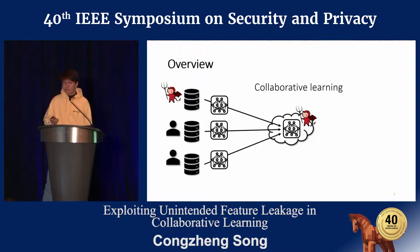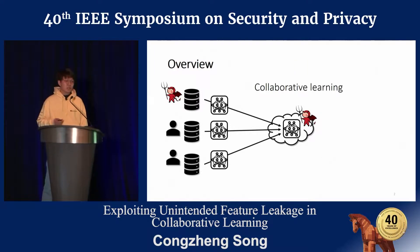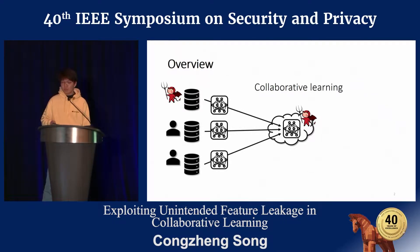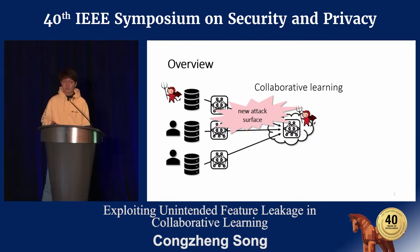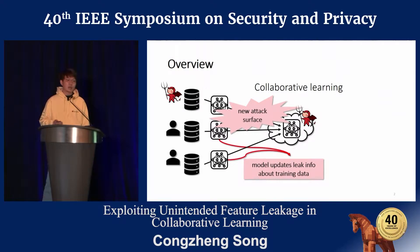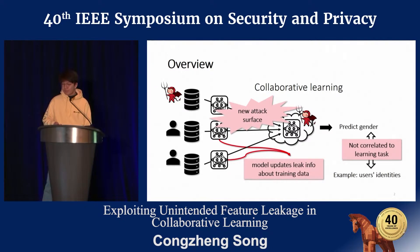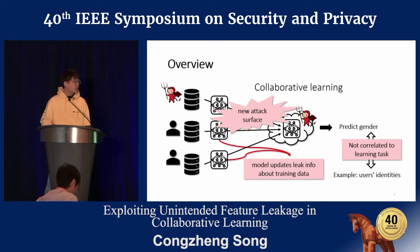Here's an overview of my talk. We consider the scenario of collaborative learning, where multiple clients wish to train a machine learning model together, and one of the participants or the server could be malicious. We demonstrate that collaborative learning provides a new attack surface. Throughout training, adversaries can learn information about other participants' data from the model updates. Moreover, the leaked information is not correlated with the learning task — so if the model is trained to predict gender given a face image, the adversary can learn information such as user IDs.